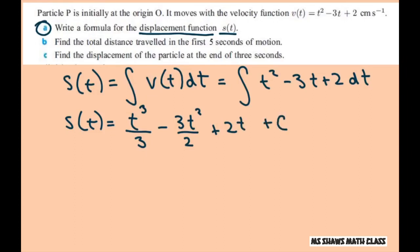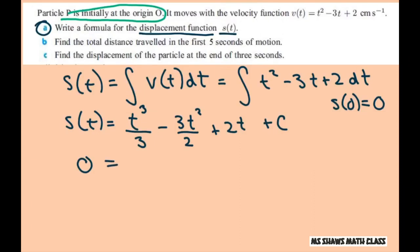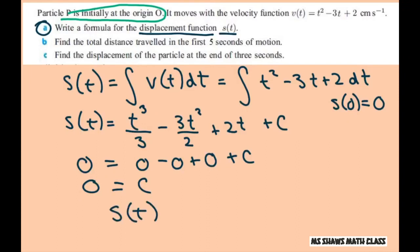Luckily we don't have to simplify. To find our C, it says the particle P is initially at the origin, so that means S of 0 equals 0. Plug in 0 for all the t's: you get 0 minus 0 plus 0 plus C. So C equals 0.